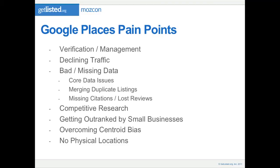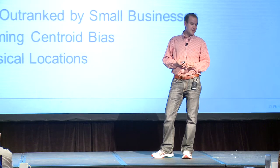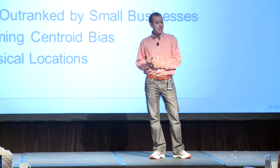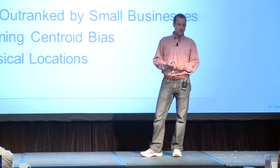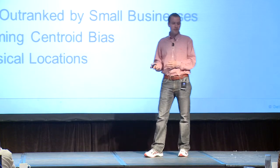Here's basically what I'm going to be talking about: pain points with Google Places. These are probably the most common emails I get or comments I see on Mike Blumenthal's blog and other blogs in the space — issues around verification, people seeing their organic search traffic declining, bad or missing data showing up in Google Places, competitive research (there was a huge shift last week in what Google displays on place pages), why big brands are being outranked by small businesses, how to overcome the centroid bias, and what to do if you don't have any physical locations.